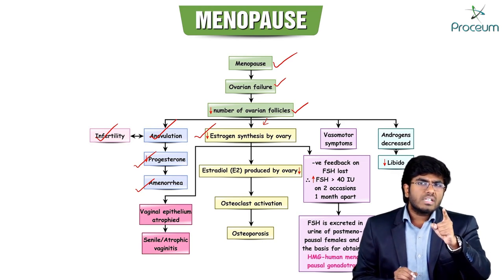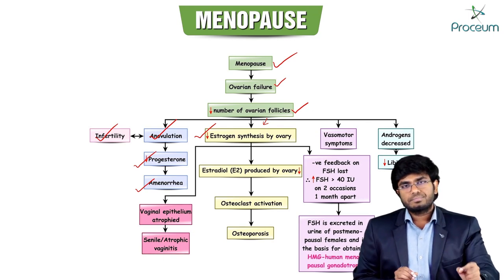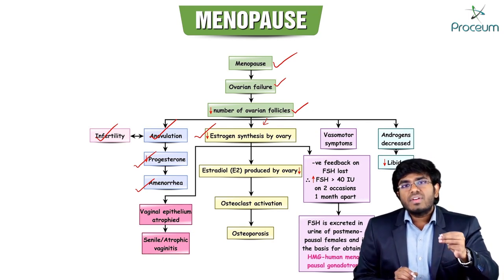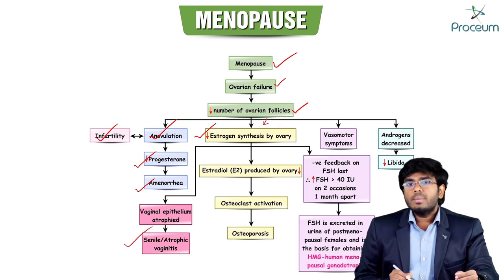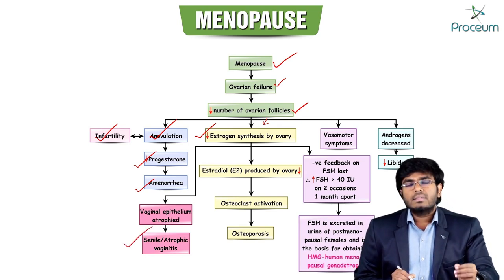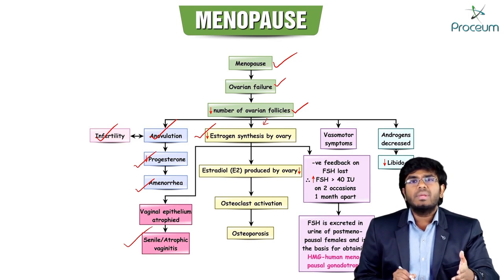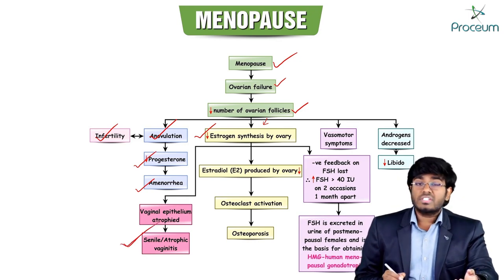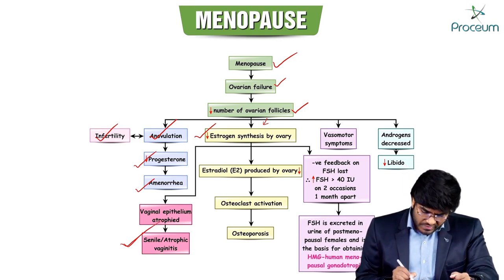Since estrogen controls vaginal epithelium, vaginal flora, and vaginal secretions, a lack of estrogen causes the vaginal epithelium to undergo atrophy, resulting in atrophic (senile) vaginitis, which is very painful.